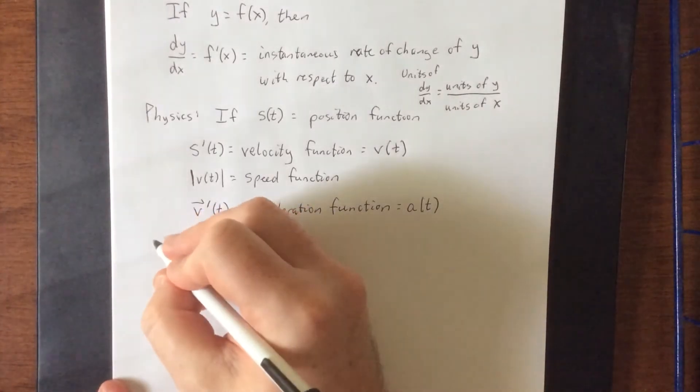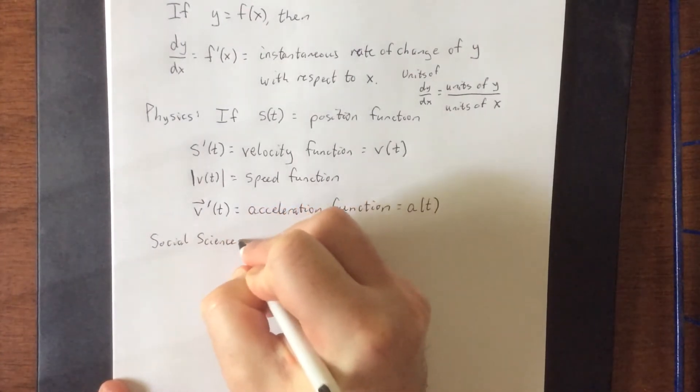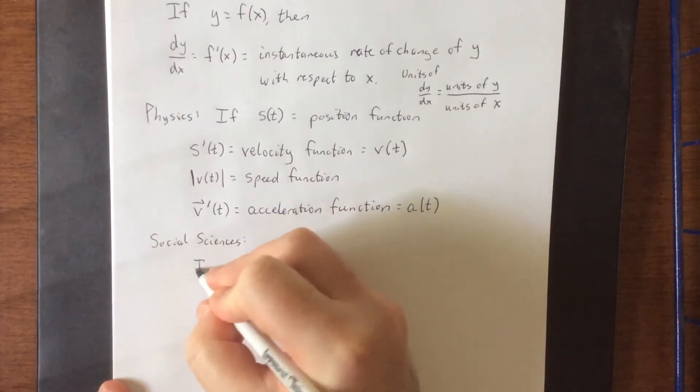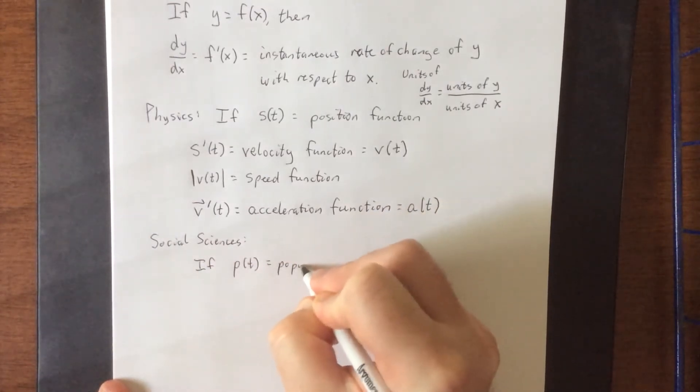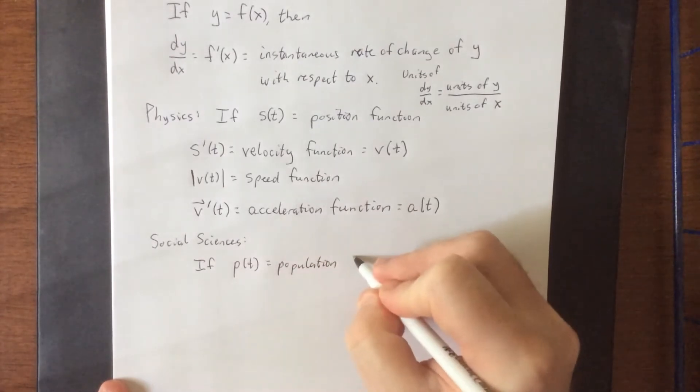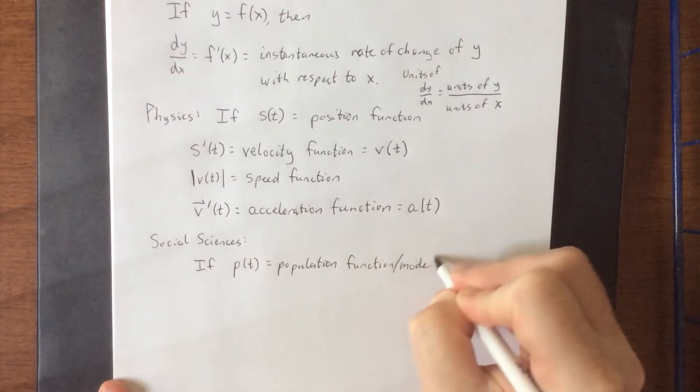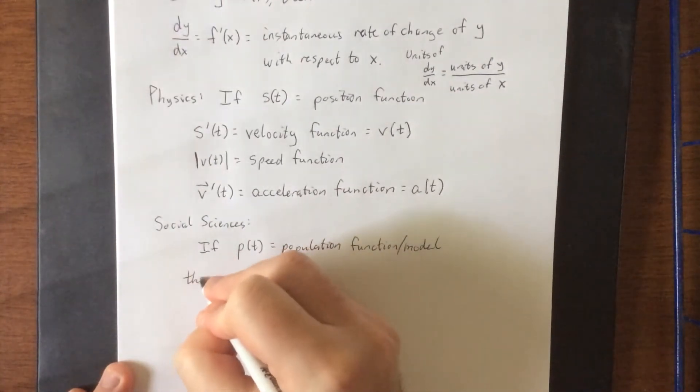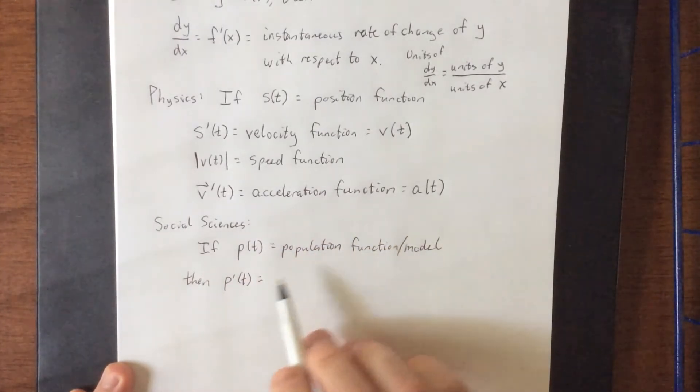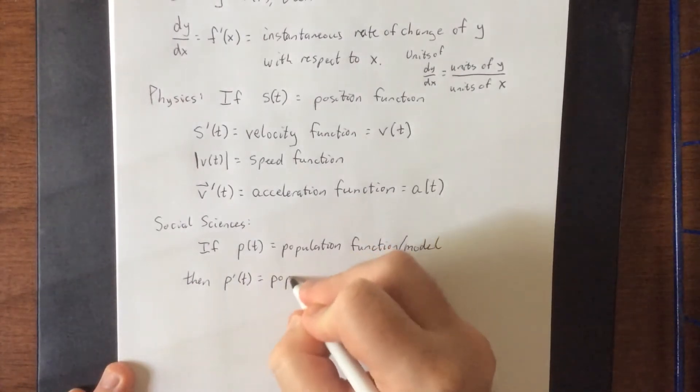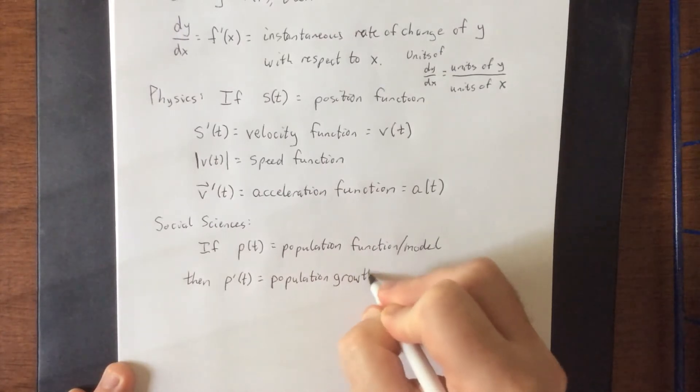Now, in addition to this, we could also talk about some social sciences. If p of t is a population function or population model, then p prime of t represents the instantaneous rate of change of population over the course of time. This would be the population growth rate.